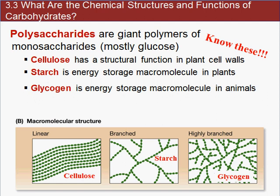Polysaccharides are giant polymers of thousands of monosaccharides linked together. You want to know three: cellulose, starch, and glycogen. Cellulose is a structural part of plants found in plant cell walls and is also dietary fiber — we do not digest cellulose, and it is linear in structure. Starch is also from plants and is the energy storage molecule in plants; it is branched in shape. Looking at the images, all those repeated green structures are monosaccharides linked together — thousands of them.